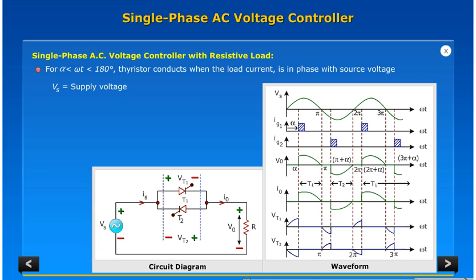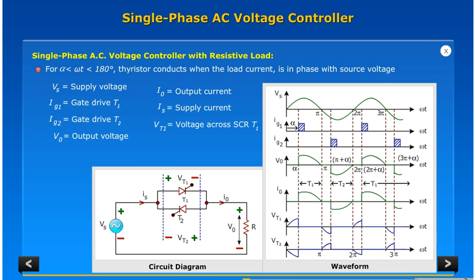Vs equals supply voltage. Ig1 equals gate drive T1. Ig2 equals gate drive T2. V0 equals output voltage. I0 equals output current. Is equals supply current. Vt1 equals voltage across SCR T1.